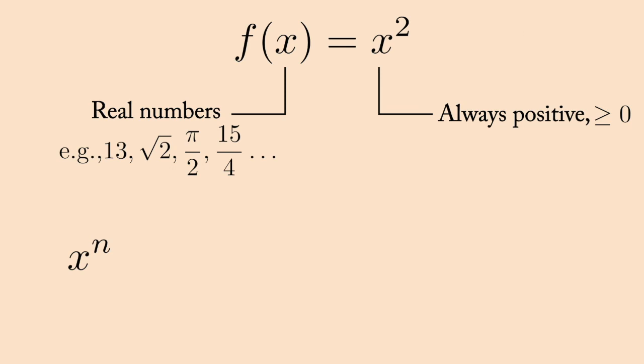For a parabola, that n equals 2. Tuning this value of n gives us handy tools to model various real-life scenarios. Take, for example, the case where n equals to 1. Then, the function represents a steady growth or decline.